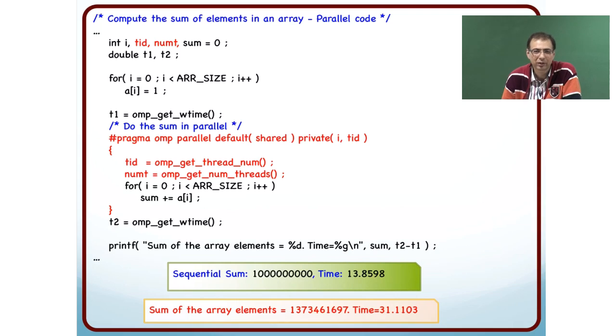Why is this time gone up? I mean, I would have expected to take 13.85 seconds, right? Because all the threads are doing the same work, which that sequential thread was doing.